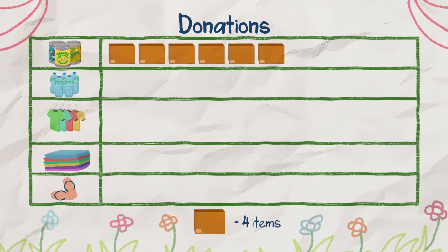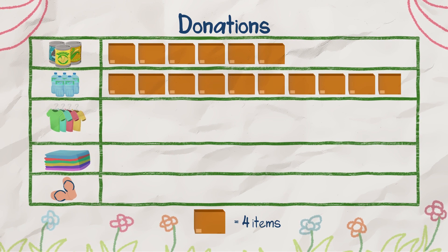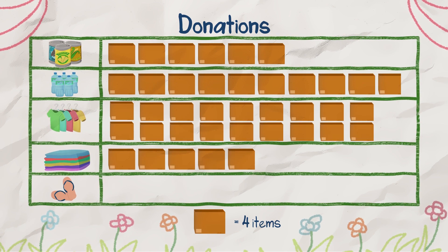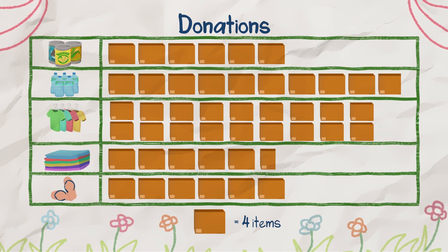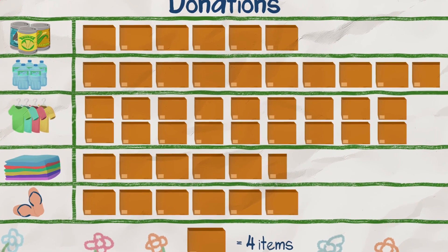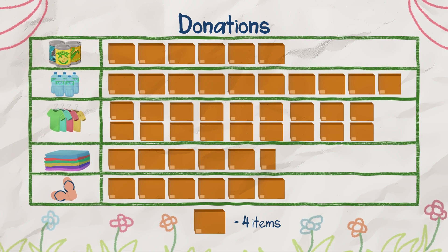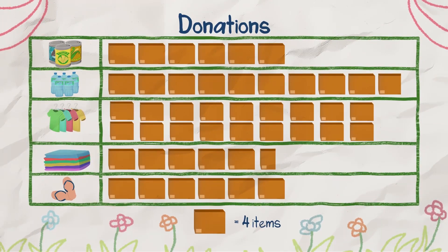We donated 24 canned goods, 39 bottles of water, 72 pieces of clothes, 22 blankets, and 24 slippers. There! That's the pictograph of our donations. Thank you for your help. Always remember to put the title and the labels needed for the tables, graphs, and pictographs that you make.